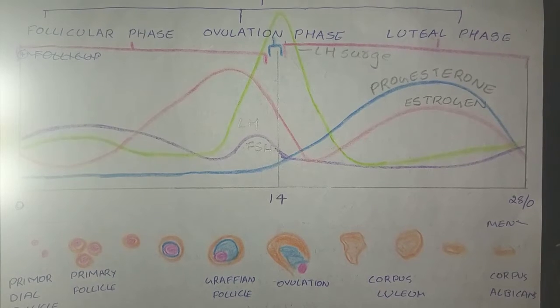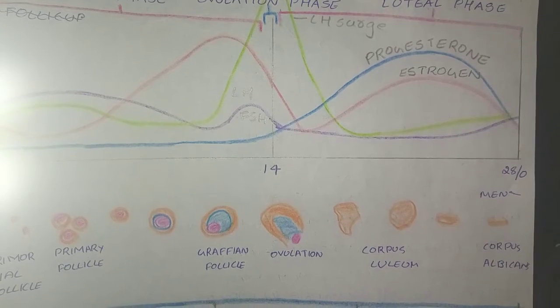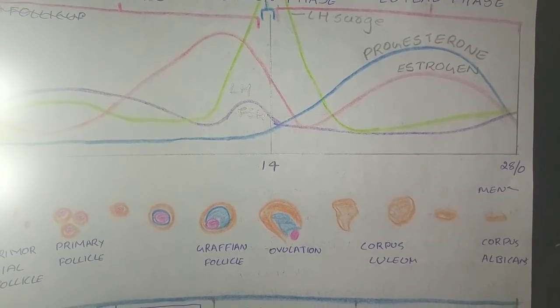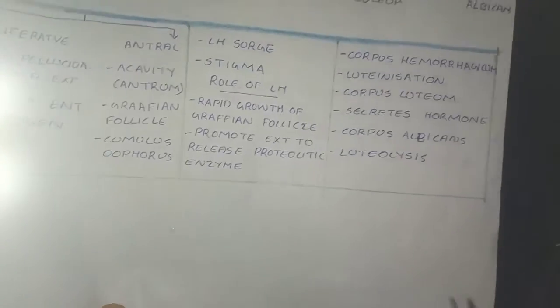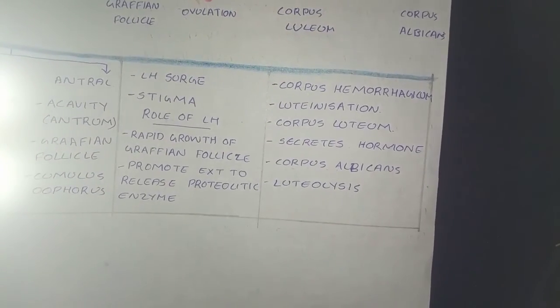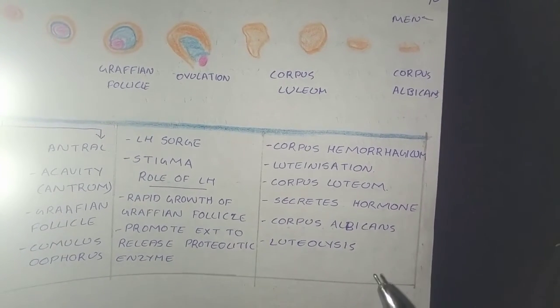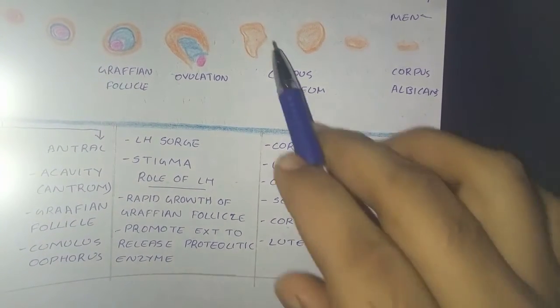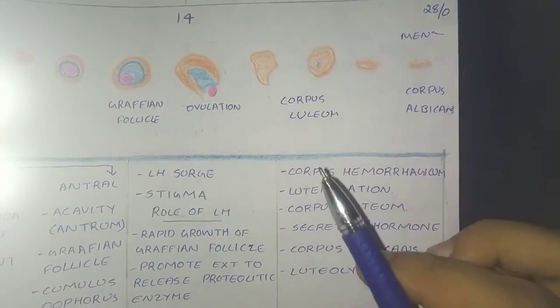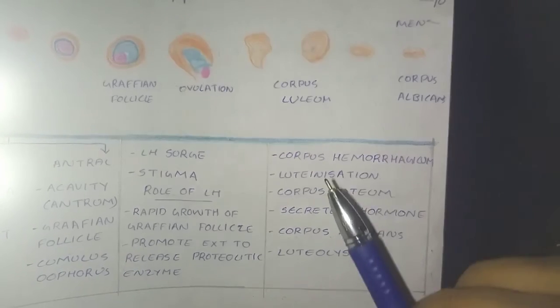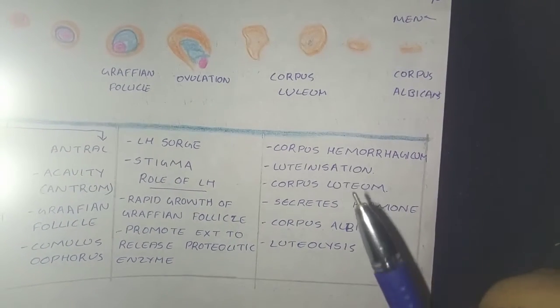Sorry for the pronunciation if there's any mistake. Now let's discuss luteinization. Luteinization means that the luteal cells form a yellow pigment called lutein, which is similar to carotene. Here we see this formation of the lutein, and these cells are called luteal cells and this process is known as luteinization.